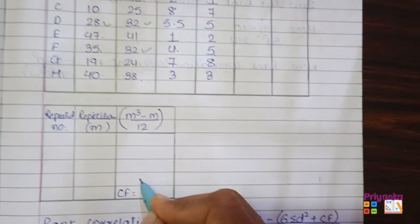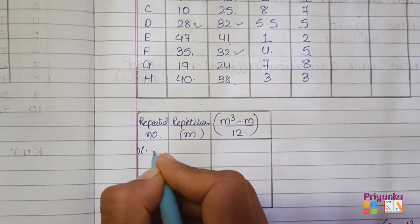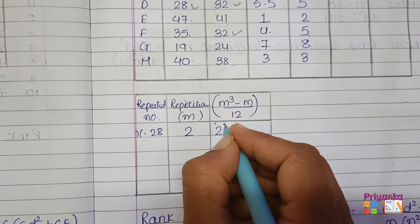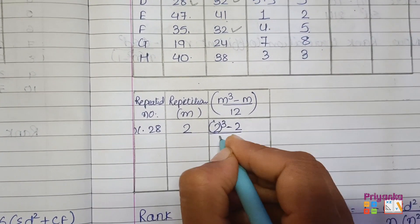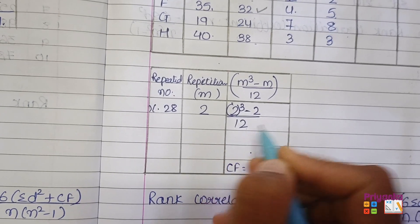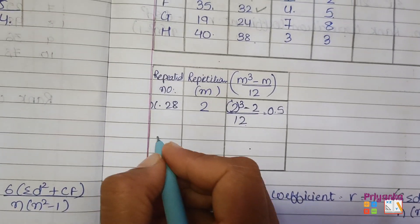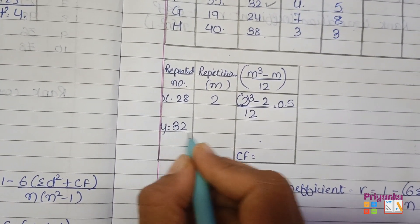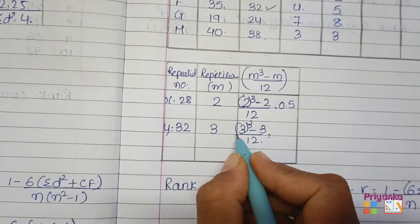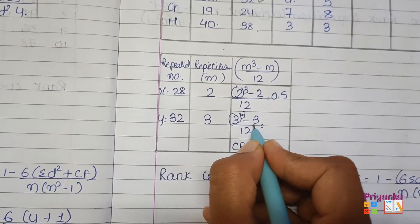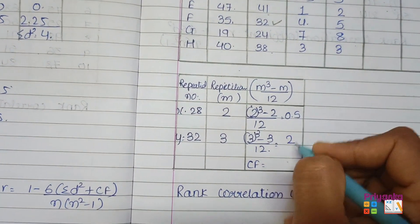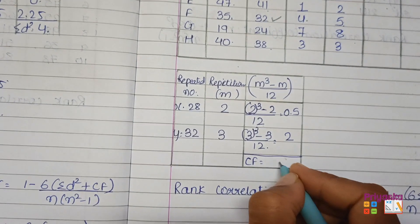Before computing D, calculate CF. From X, 28 was repeated twice (m=2): CF₁ = (2³−2)/12 = (8−2)/12 = 6/12 = 0.5. From Y, 32 was repeated three times (m=3): CF₂ = (3³−3)/12 = (27−3)/12 = 24/12 = 2. Total CF = 0.5 + 2 = 2.5.